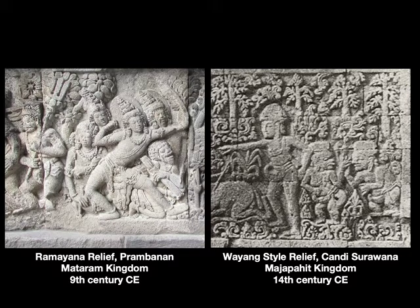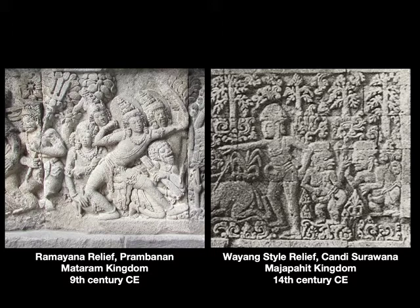Comparing the Wayang relief carvings at Candi Surawana in the Majapahit Kingdom with the Ramayana relief at Prambanan in the Mataram Kingdom, notice how much more fully rounded and naturalistic the gestures and actions are at Prambanan — there's a sense of a scene played out by characters in a play. By contrast, the flatness of the Wayang style makes it seem more like a painting translated into relief. It is very shallow, surface-oriented, and characters are flattened in a schematic way so their essential gestures can be easily read.